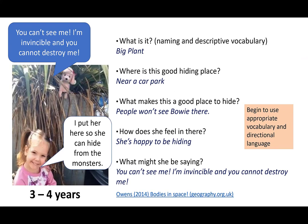Here's an example from Primary Geography: a three-and-a-half year old hiding her teddy and explaining why — 'I've put it here so it can hide from the monsters.' The figure is saying 'you can't see me, I'm invincible.' From this we can see the child using directional language, giving explanations as to why spatial location matters, and thinking about how her toy feels — she's happy to be hiding. This shows both emotional thought and cognitive thought working together, which is really important to develop.